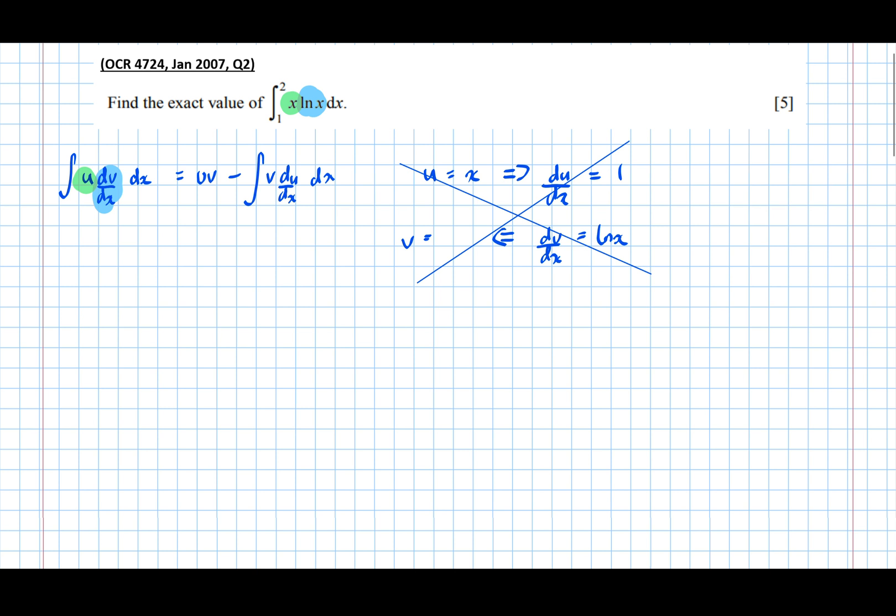Now the first thing in the product here needn't be the u and the second thing needn't be the dv by dx. We can swap the order, so actually that says we've got the order wrong.